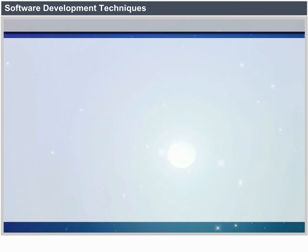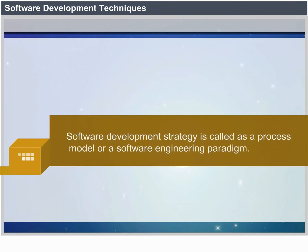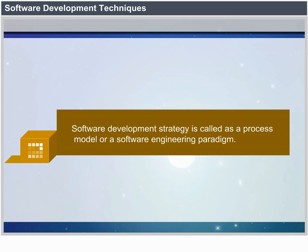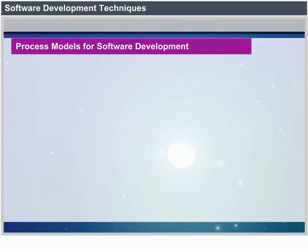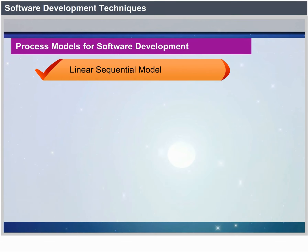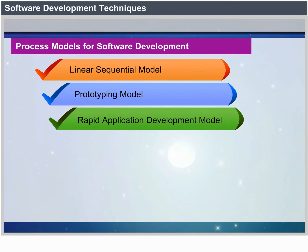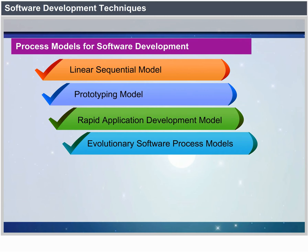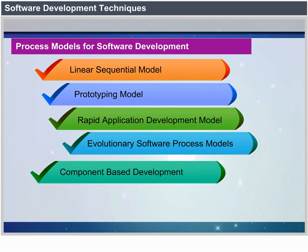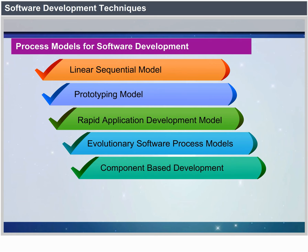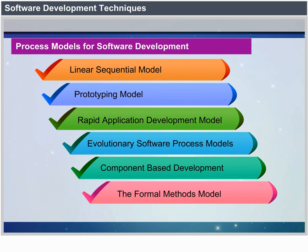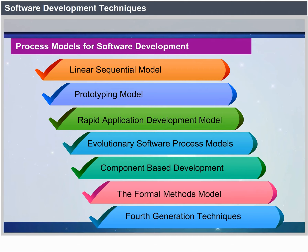Software development techniques — strategies are called a Process Model or a Software Engineering Paradigm. Process models for software development include: Linear Sequential Model, Prototyping Model, Rapid Application Development Model, Evolutionary Software Process Models, Component-Based Development, the Formal Methods Model, and Fourth Generation Technique.